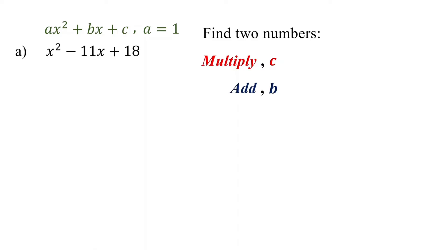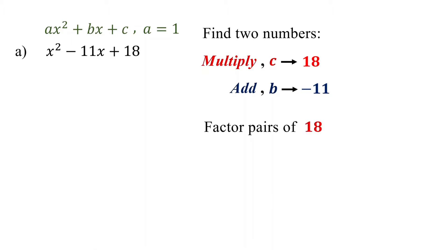In this example, the constant term is 18 and the coefficient of the middle term is negative 11. So we need to find two numbers that multiply to give 18 and add up to negative 11. To easily find these numbers, we start by listing the factor pairs of 18: 1 and 18, 2 and 9, 3 and 6. We also have the negative factor pairs, which can be obtained by changing the sign of these factor pairs. Now we have a list of all pairs that multiply to give 18.